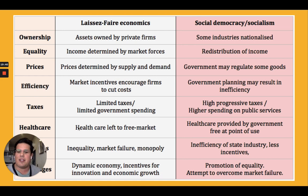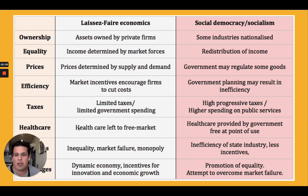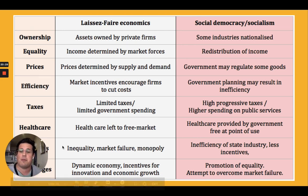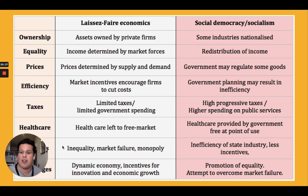For the past two decades, social democracy and liberalism have appeared to be the only viable political economic systems, but even the countries using these systems have been undergoing further economic liberalization — cutting taxes, reducing regulation, privatizing state-owned businesses and public goods, and expanding property rights. With the financialization of the economy, this has become a global trend. This is the main difference between the liberal economy and a socialist economy in terms of ownership, equality, prices, efficiency, taxes, healthcare, disadvantages, and some advantages as well.